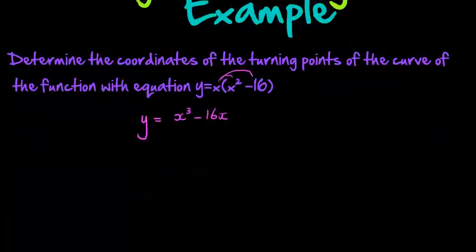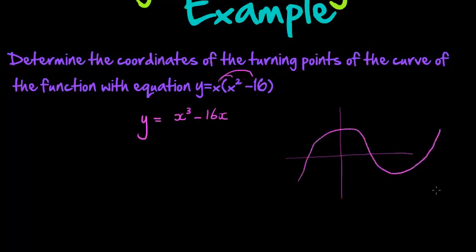What type of function is it? Well it's a cubic polynomial. If we were to draw this it would have a positive shape, it would look something like this. We know that there are going to be two turning points, and to find the coordinates of those turning points, remember that the turning point has the feature that the gradient at that point is zero.